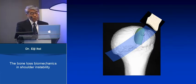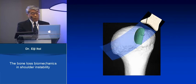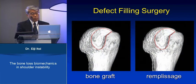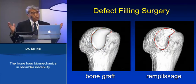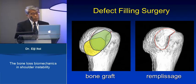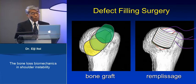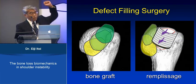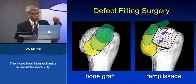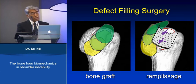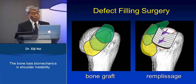How do we treat an off-track Hill-Sax lesion? There are two methods. One is to fill this defect with bone graft or perform remplissage. The other is to fill the glenoid bony defect with bone graft, which makes the glenoid track wider. Bone graft and remplissage are commonly performed but are very different biomechanically. With bone graft, the glenoid can move over the grafted bone along the posterior end range of motion. However, with remplissage, the Hill-Sax lesion becomes extra-articular, so the glenoid cannot move over it — it must move around it. The glenoid tract is therefore significantly distorted after remplissage.